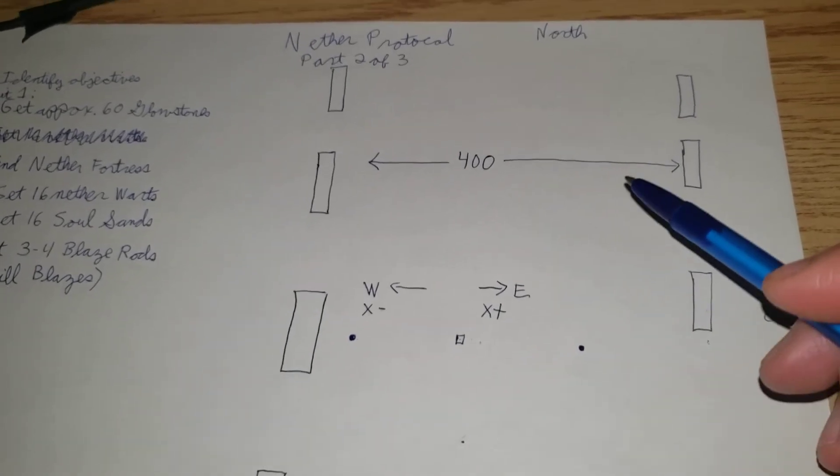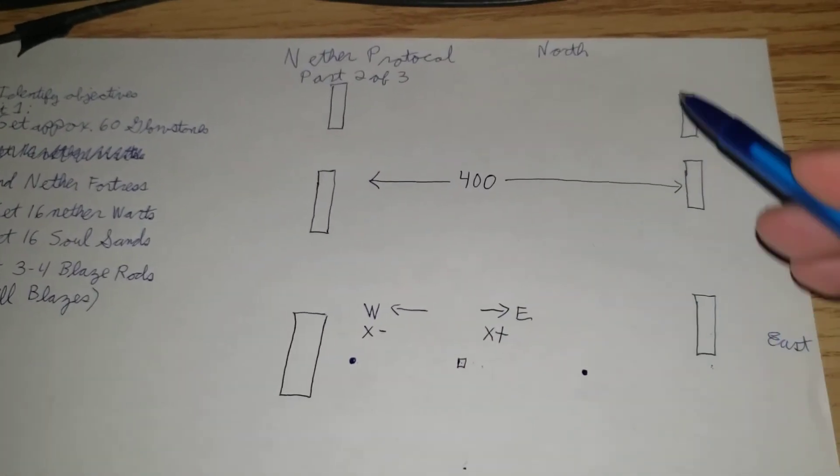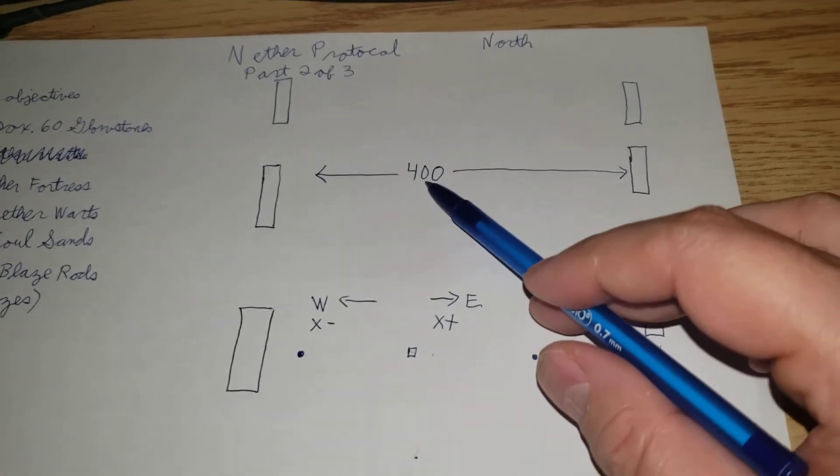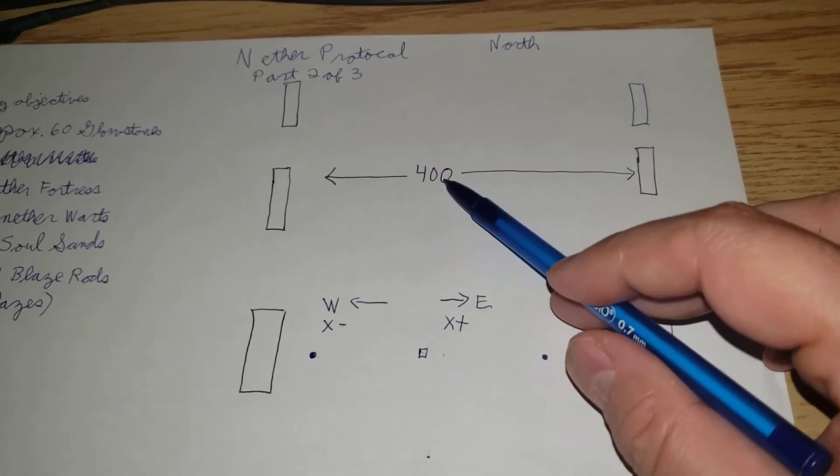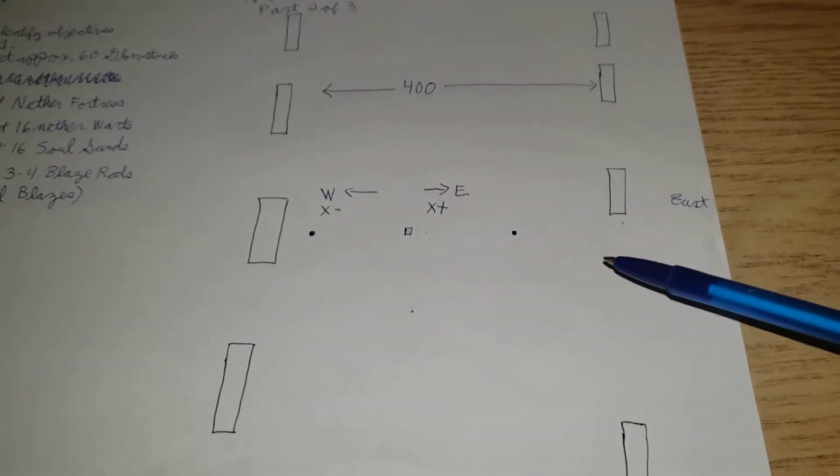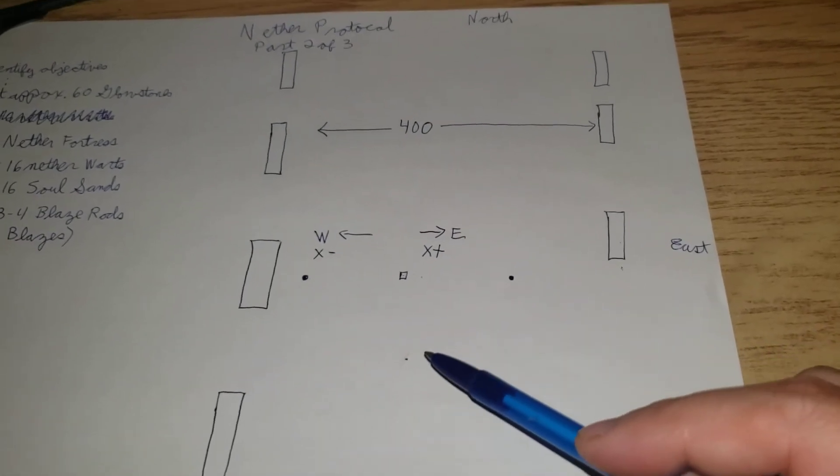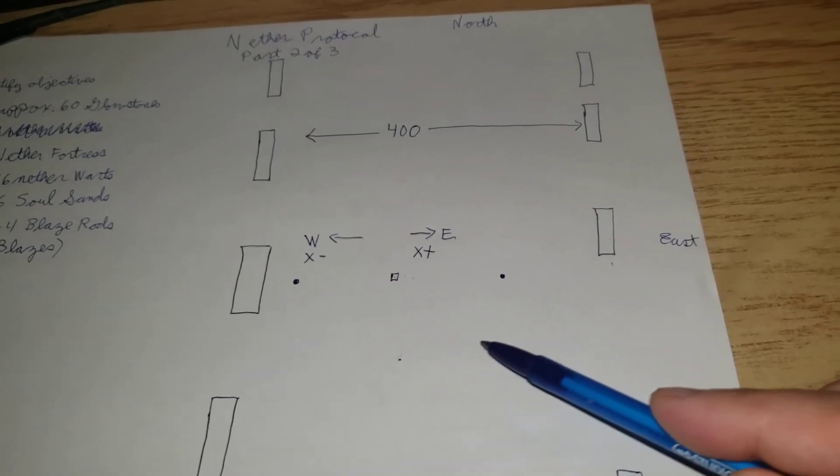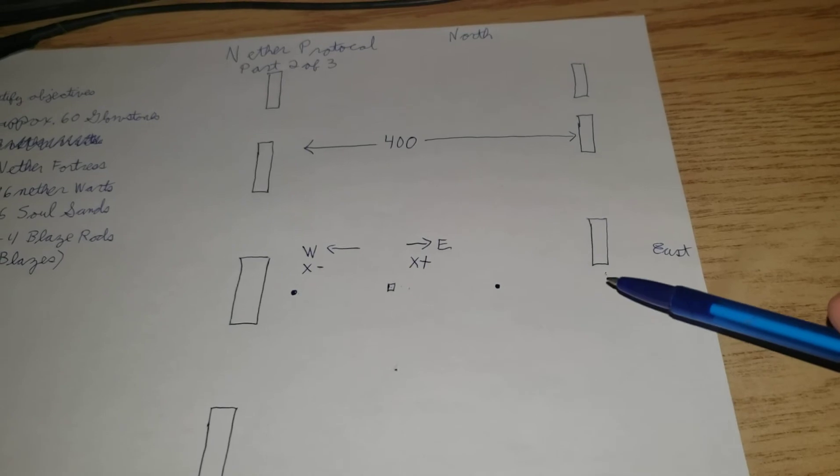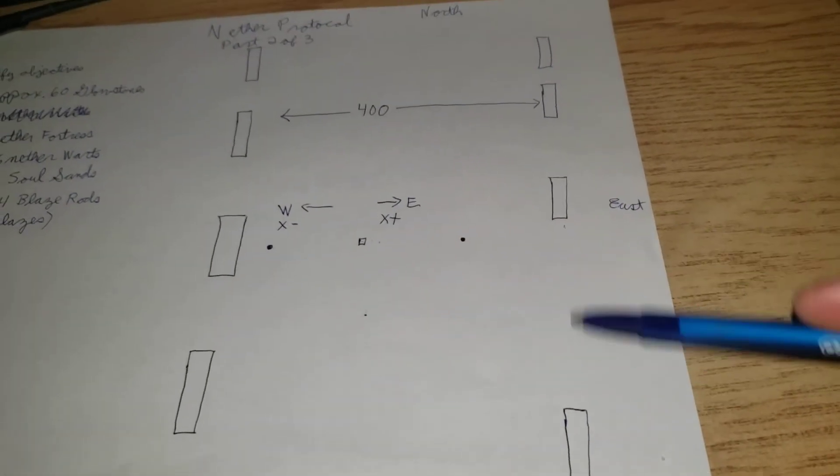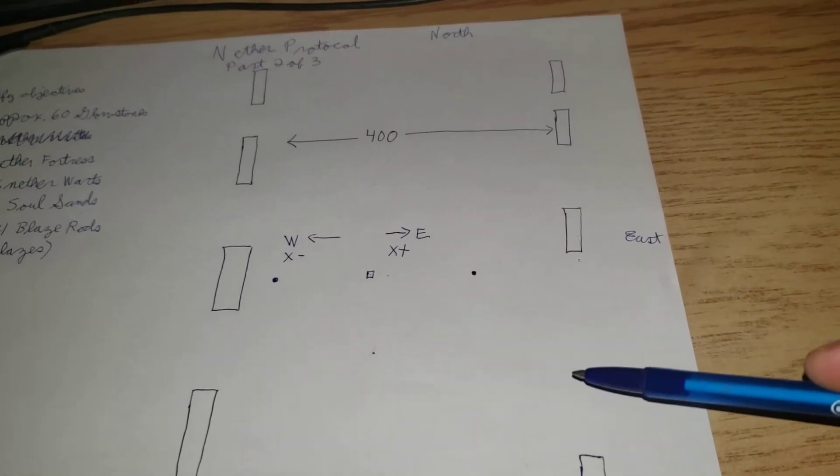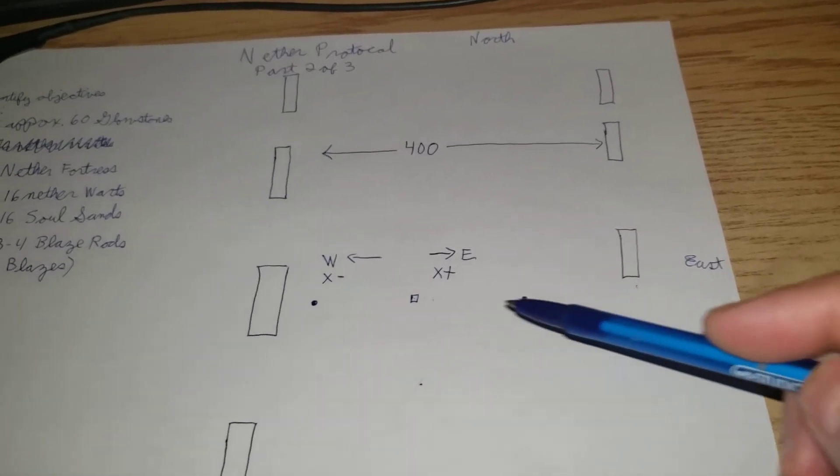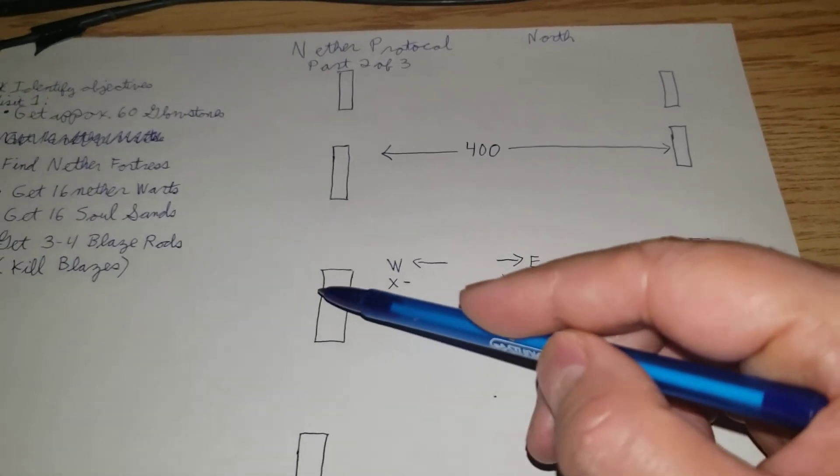Now, the average distance between two rows of nether fortresses is 400 tiles. Sometimes if you're not lucky, you will not find the fortress. Even if you go, for example, if your starting fortress would be here and you go east, you might miss the fortress because there's a large gap sometimes. So it's all based on luck. And if you don't find one, you keep going east.